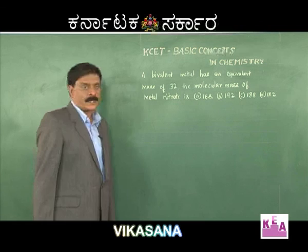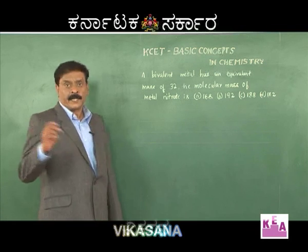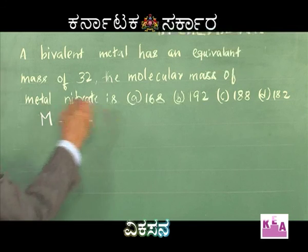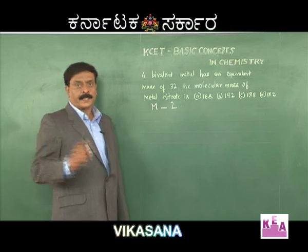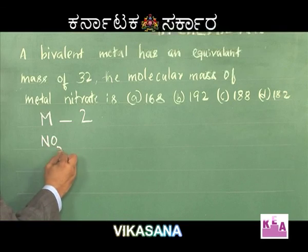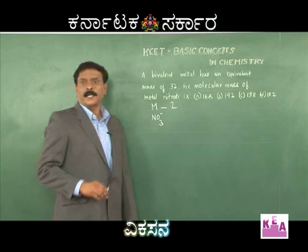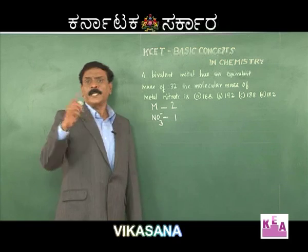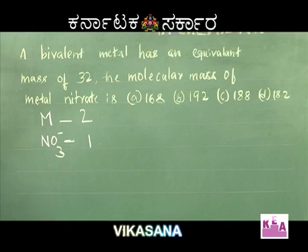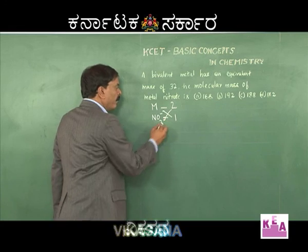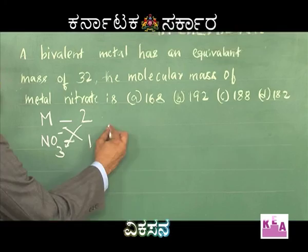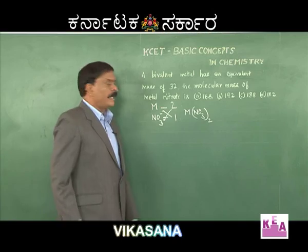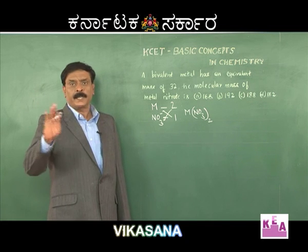How do we solve this? The metal is bivalent; let us say the metal is M with valency 2. It is a metal nitrate; the nitrate group is NO3 minus and the valency of nitrate is 1. When you write the formula of the metal nitrate, you interchange these numbers, so the formula of the metal nitrate will be M(NO3)2.